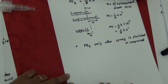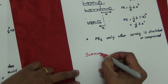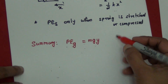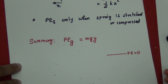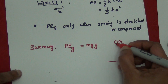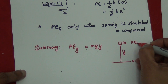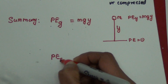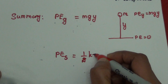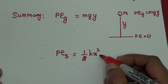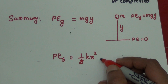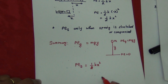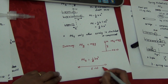As a summary: potential energy due to gravity is mgy, where y is the height measured from your chosen zero potential level. Potential energy due to a spring is ½kx², and you should know that this potential energy exists only when the spring is stretched or compressed. In the next video we will see the conservation of energy. Thank you.